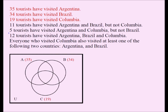Now let's work with the next lines. 11 tourists visited Argentina and Brazil but not Colombia — so 11 goes in the region belonging to both the Argentina and Brazil circles but outside the Colombia circle. 5 tourists visited Argentina and Colombia but not Brazil — these people visited Argentina and Colombia but not Brazil, so 5 goes in that intersection region.